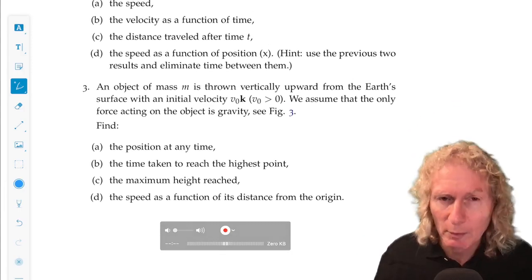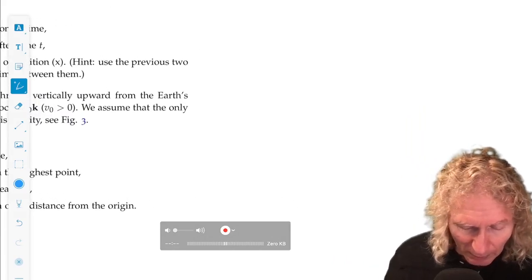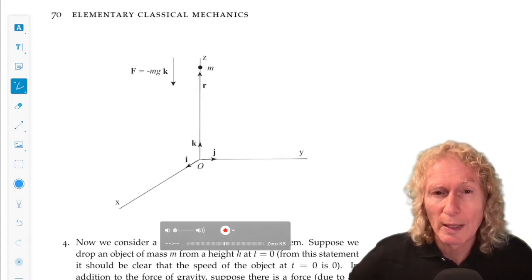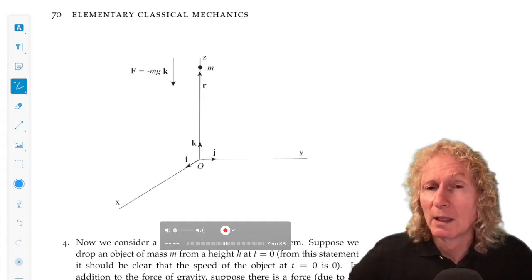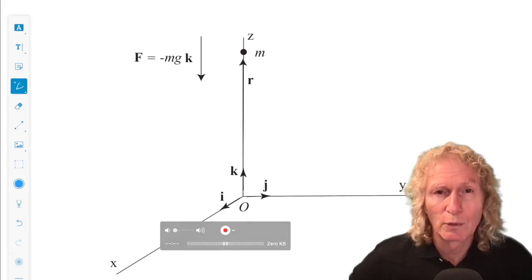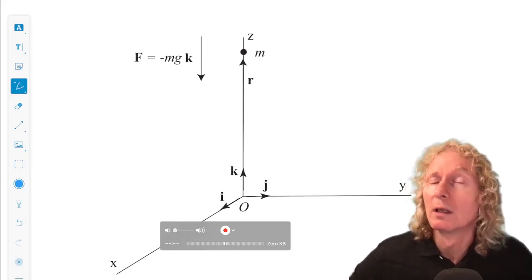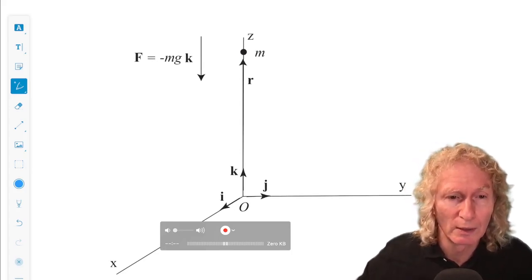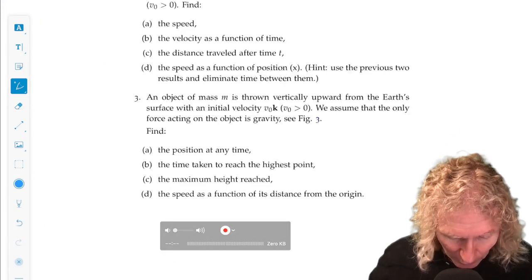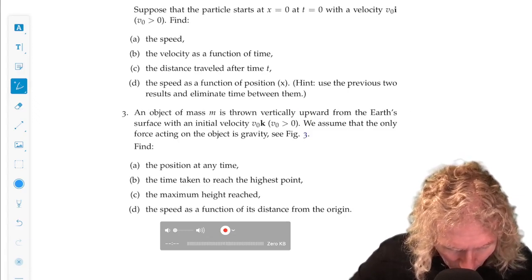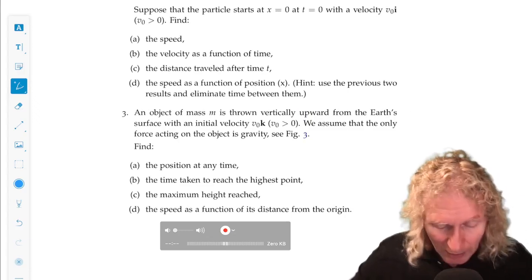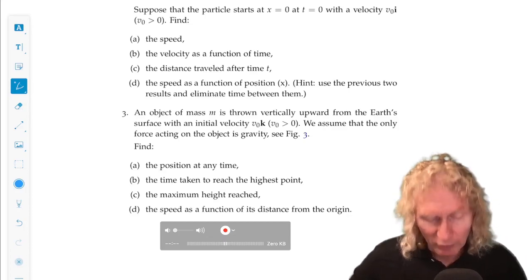Problem three is very similar. It seems like it's a separate problem. Well, it is a separate problem, but you throw a ball straight up in the air. So in the k direction, the only force acting on it is the gravitational force minus mgk. So it's acting straight down in the k direction, vertical direction. So I want you to do exactly the same four things. Well, not exactly, sorry about that. Position at any time.